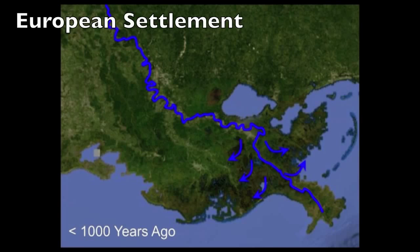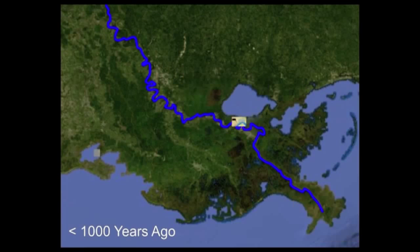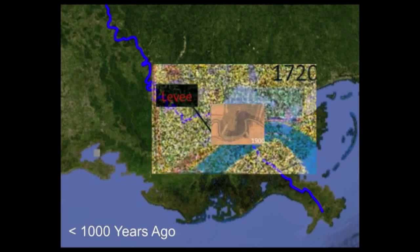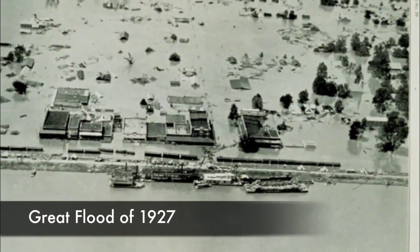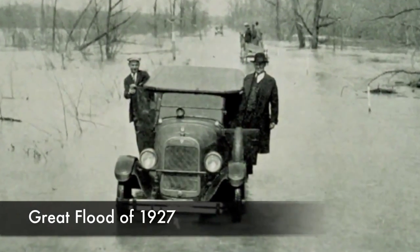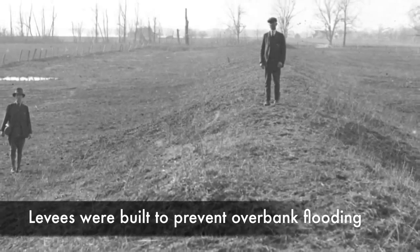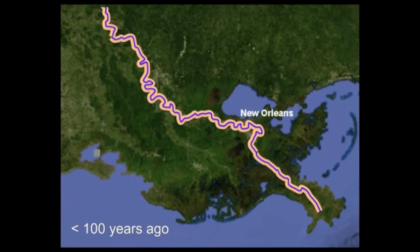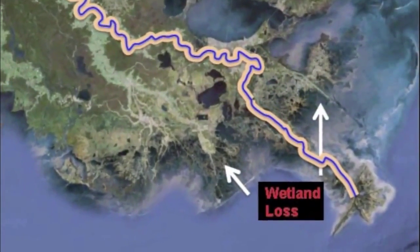Then Europeans arrived and established New Orleans in a bend of the Mississippi River. To prevent flooding of New Orleans, levees were built and extended as the city grew. In the 1920s there were catastrophic floods such as the Great Flood of 1927. Disastrous flooding prompted construction of levees which eventually extended the entire length of the lower part of the river. Levees prevented natural sediment delivery to the wetlands in the delta. Instead, sediment was shunted offshore into deep water and the wetlands sitting atop compacting sediment began deteriorating.